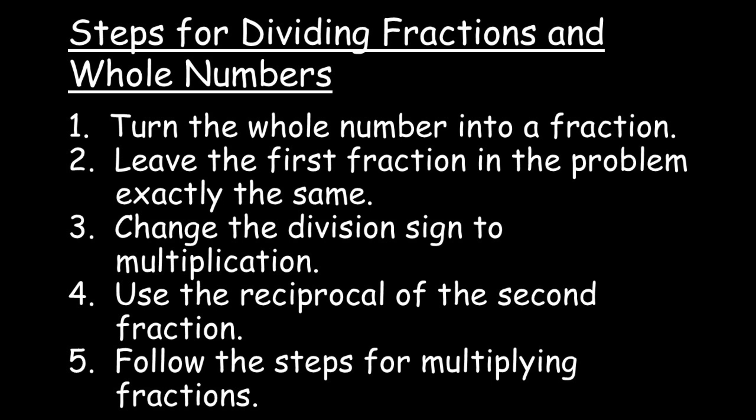You will leave the first fraction exactly the same — it doesn't matter whether this first fraction was originally the whole number or originally a fraction, it needs to stay the same. Then you'll turn your division sign to multiplication and multiply by the reciprocal of the second fraction. Once you have your work set up, you are multiplying fractions: numerator times numerator and denominator times denominator. Let's take a look at our examples.